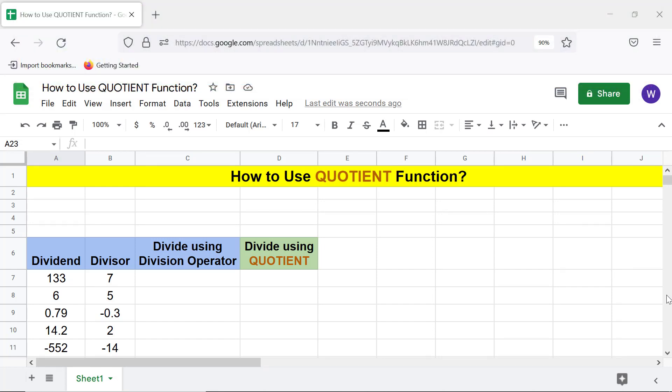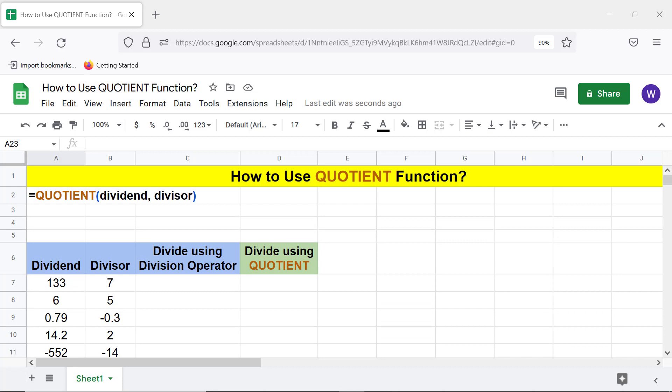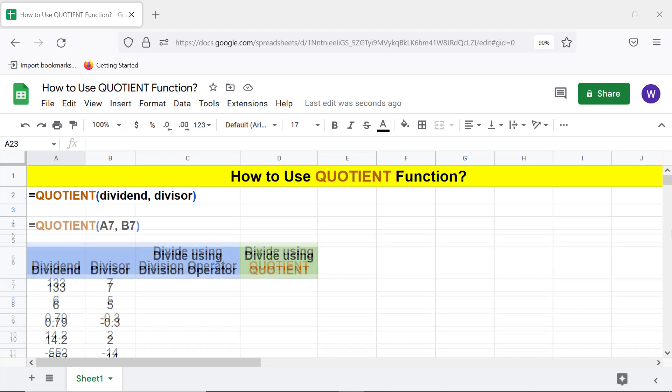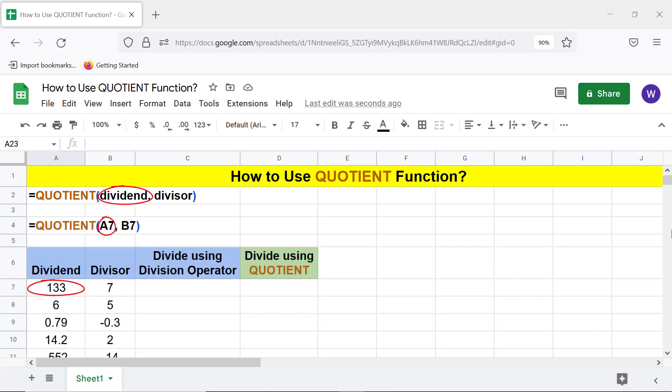Here's the Quotient function formula. Let's look at an example. Dividend is the number which another number, the divisor, divides. Divisor is the number which divides the dividend.